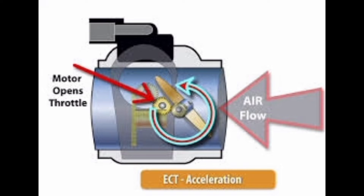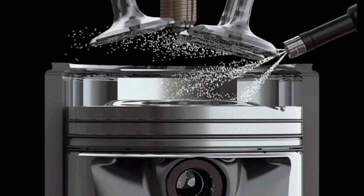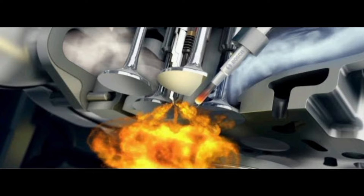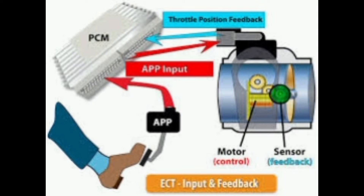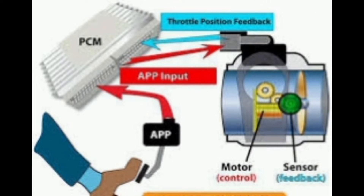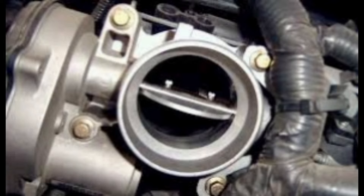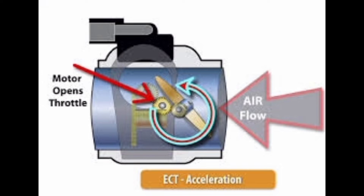The throttle body valve is used as a butterfly valve. The throttle is used to move through the motor.